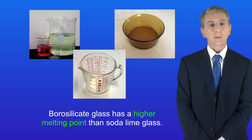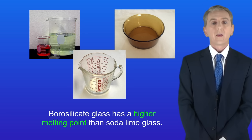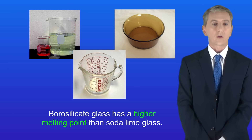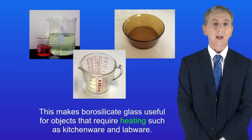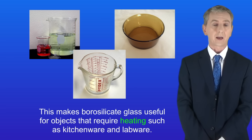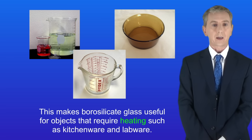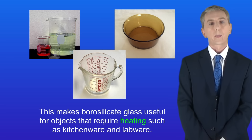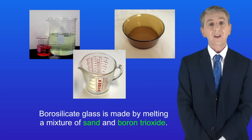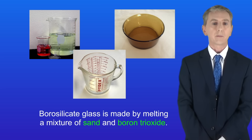There is another type of glass called borosilicate glass. This has got a higher melting point than soda lime glass, and this makes borosilicate glass useful for objects that require heating, for example kitchenware and labware. Borosilicate glass is made by melting a mixture of sand and boron trioxide.